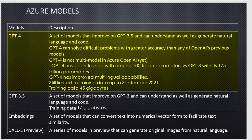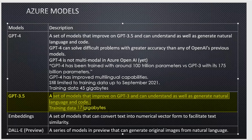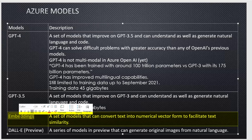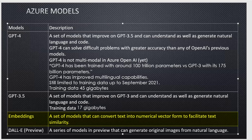GPT-3.5 Turbo is what Roy has been primarily using. Embeddings is another model type, particularly powerful for scenarios like chatting with private documents and semantic or cognitive search. You feed text into the embeddings model and it returns a vector — a numeric representation of that text — which enables semantic similarity comparisons and private document querying.